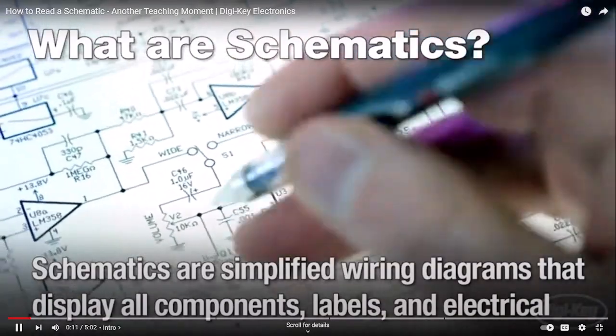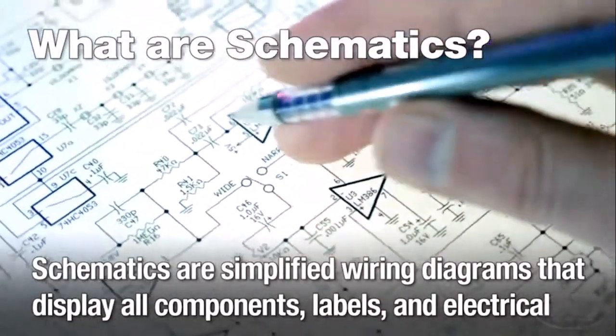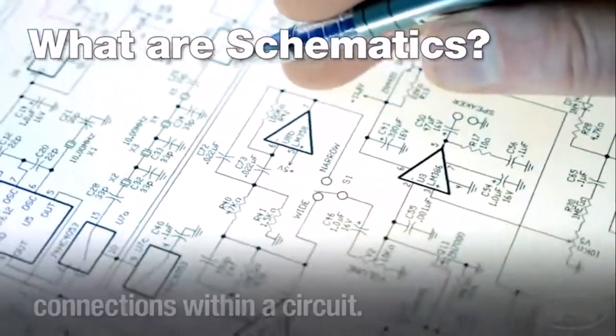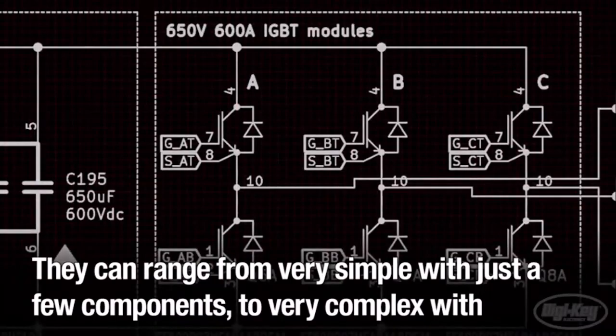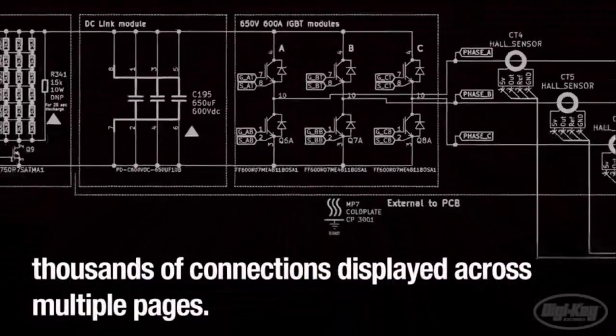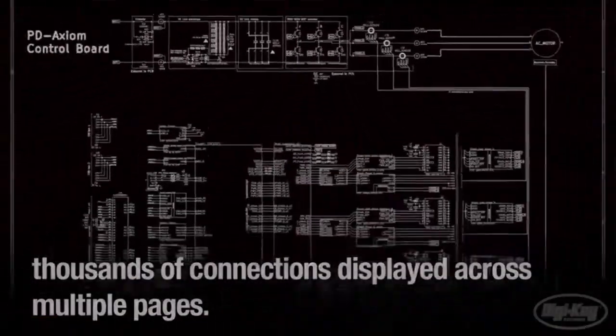Schematics are simplified wiring diagrams that display all components, labels, and electrical connections within a circuit. They can range from very simple with just a few components to very complex with thousands of connections displayed across multiple pages. In this